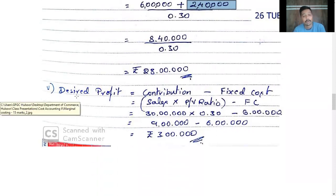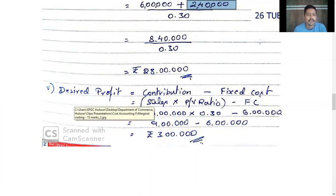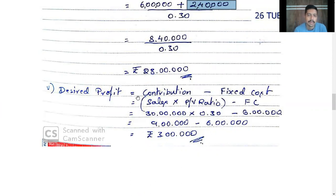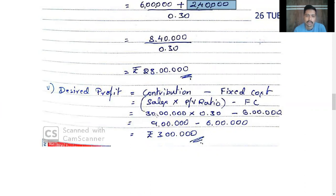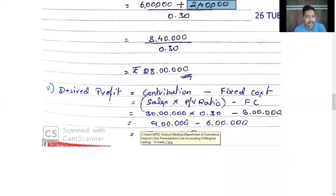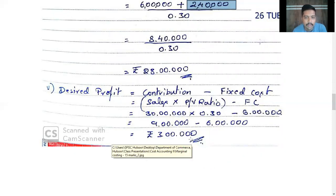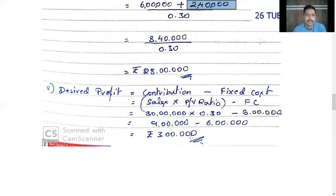Number 5 — desired profit when sales are Rs. 30,00,000. Formula: contribution minus fixed cost. Sales into PV ratio minus fixed cost: 30,00,000 into 30% = 9,00,000 minus 6,00,000 fixed cost gives a profit of Rs. 3,00,000.